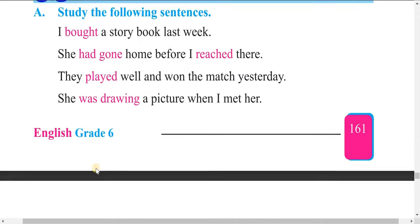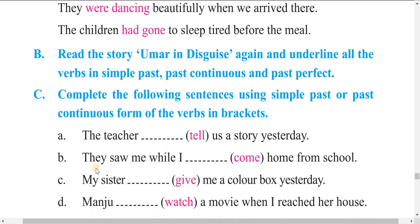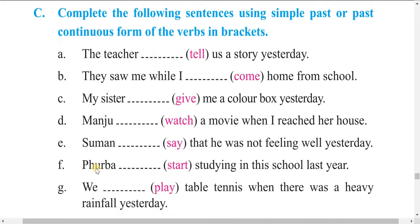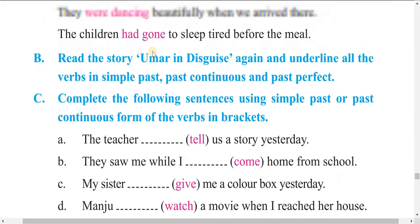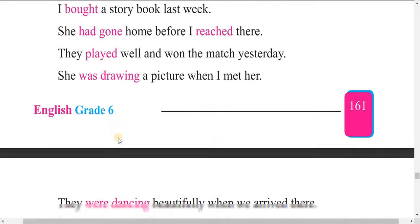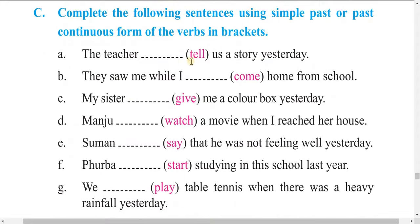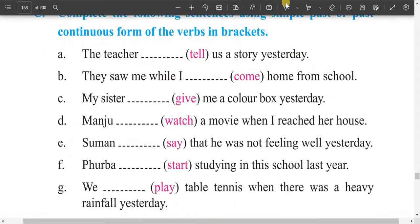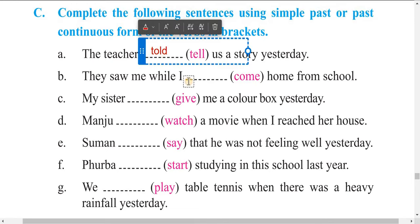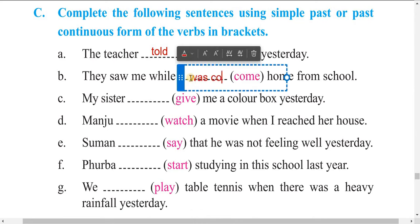Now complete the following sentences using the simple past or past continuous form of the verbs in brackets. Examples given: 'I bought a history book last week.' 'She had gone home before I reached there.' 'They played well and won the match.' 'She was drawing a picture when I met her.' For the first exercise: 'The teacher told us' — we use 'told' because 'yesterday' indicates past tense.